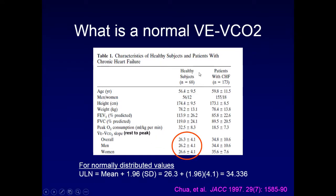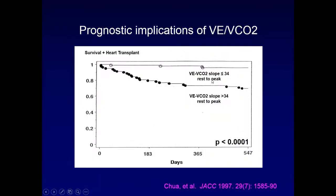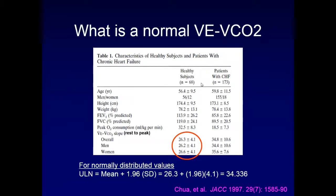Comparing CHF patients against this threshold: those with a VE/VCO2 slope less than 34 have a pretty good prognosis over two years, whereas those with a slope greater than 34 have a statistically significantly worse prognosis. Again, this is measured as a slope from rest to peak.